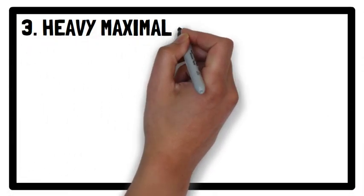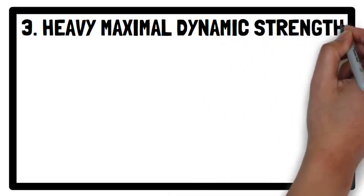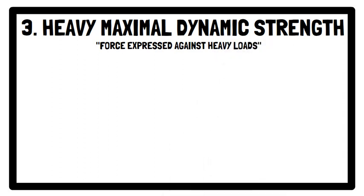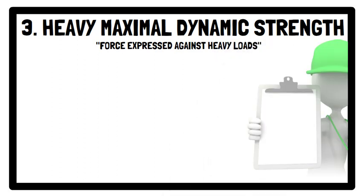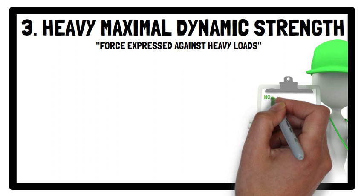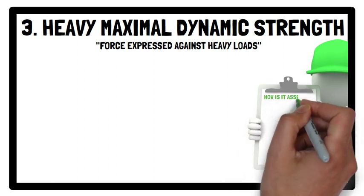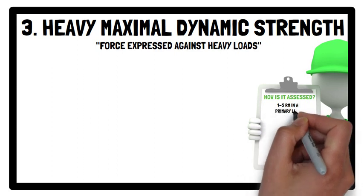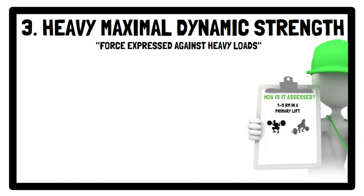Moving on to the third strength quality: heavy maximal dynamic strength. This is the force expressed against heavy loads, typically involving both an eccentric and a concentric phase. It is often assessed by a 1–5 repetition maximum in a primary lift like a squat or deadlift. However, because there is a near-linear perfect relationship between relative external load and barbell mean velocity,